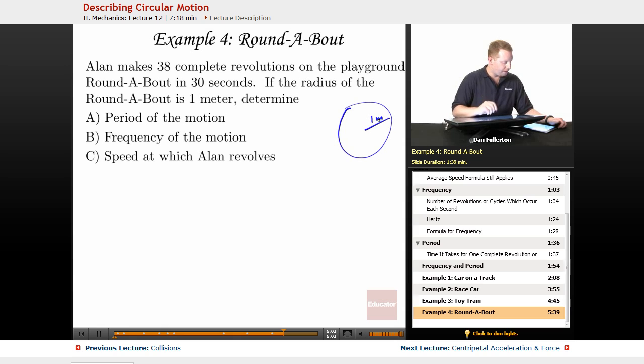The period of the motion, how long it takes to go once around. He makes 38 revolutions in 30 seconds, so that's 30 seconds for 38 revolutions, or 0.789 seconds.